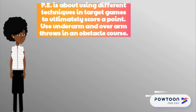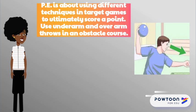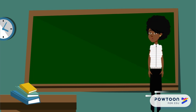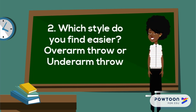This lesson in PE is about using different techniques in target games to ultimately score a point. The activity: use underarm or overarm throws in an obstacle course. Use the underarm and overarm throwing styles when aiming for the target on the obstacle course. Which style do you find easier — overarm throw or underarm throw?